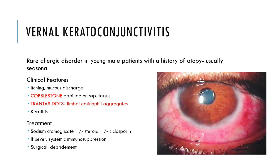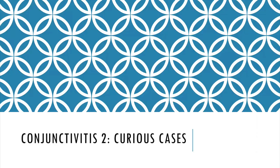Treatment is like most allergic disorders — sodium cromoglycate, which is a mast cell stabilizer, steroids to dampen down the inflammation, and cyclosporine to prevent secondary infection. If severe, systemic immunosuppression can be given, and surgical treatment is via debridement of the conjunctival inflammation. So that was a quick tour through some classical types of conjunctivitis which are not routinely seen — I hope that was helpful and I hope to see you again.